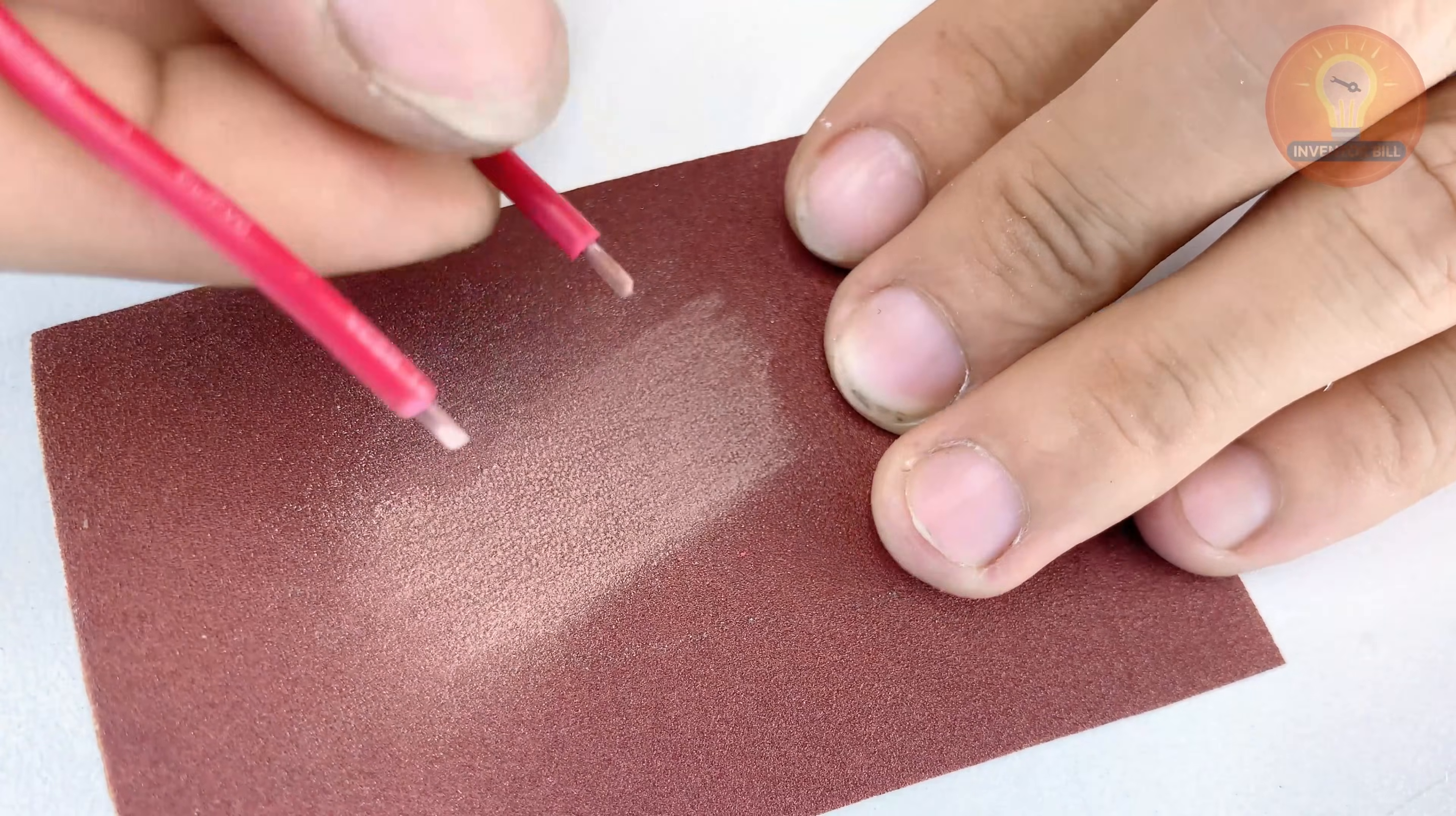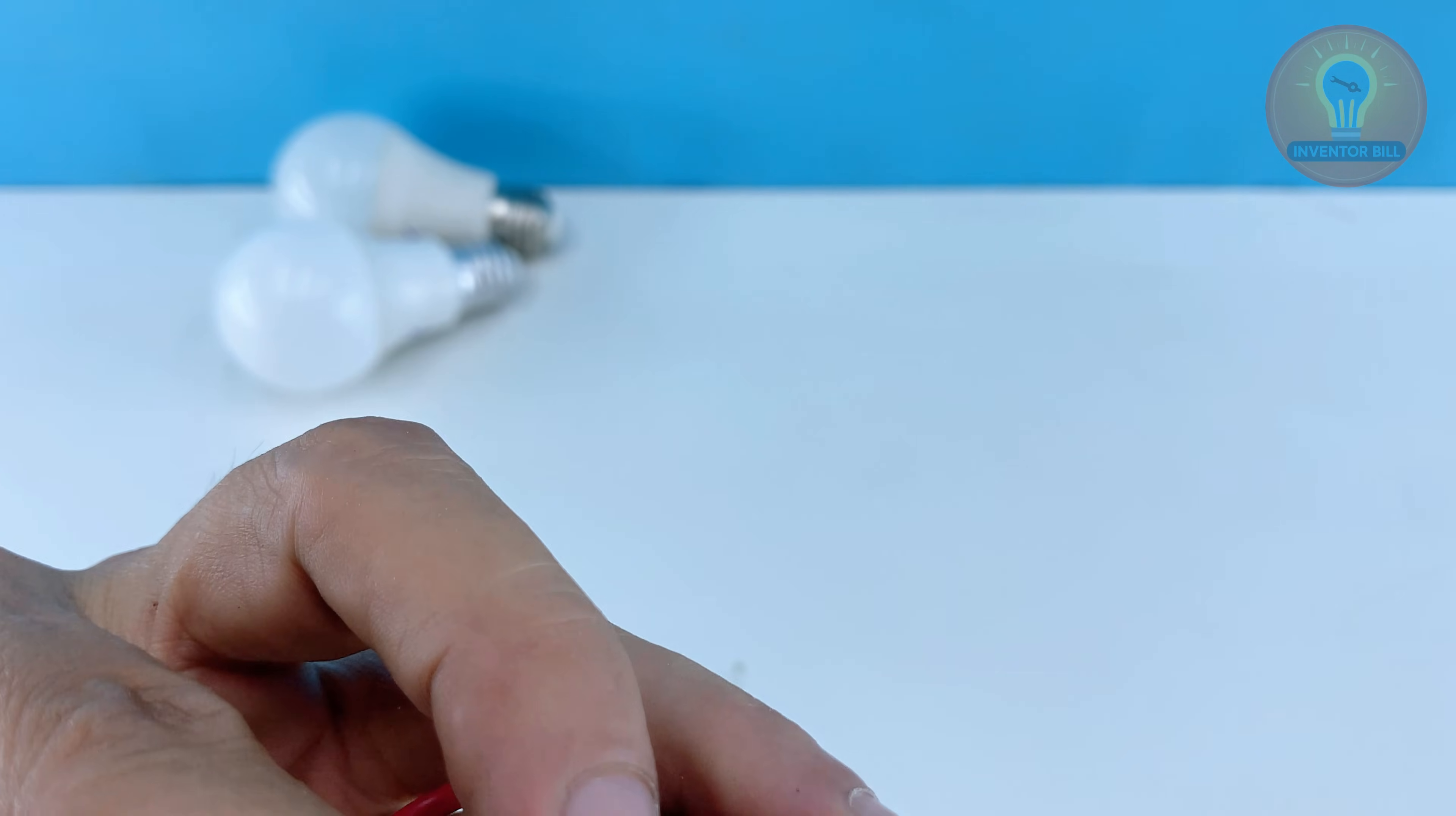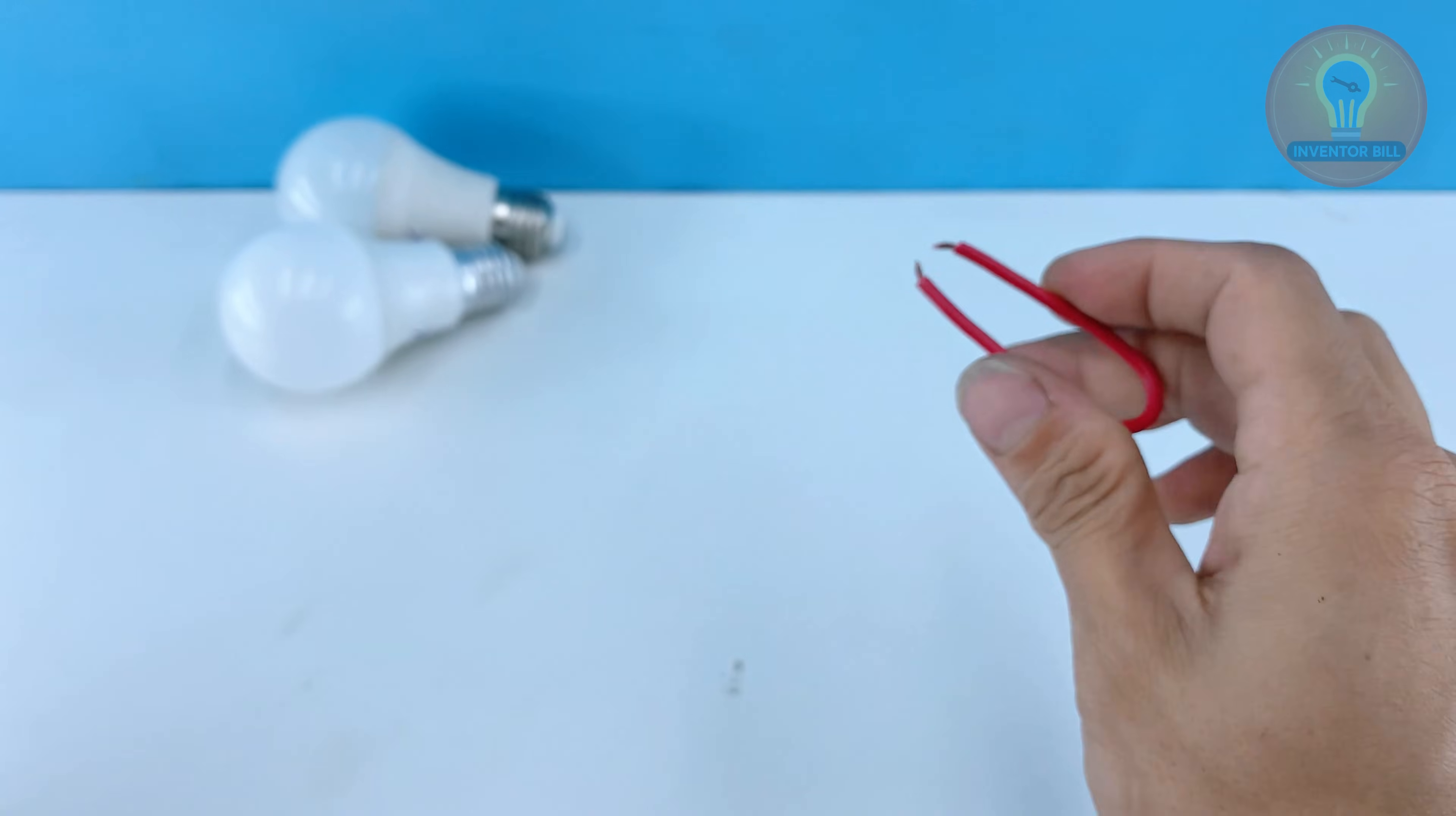Now place each tip on fine sandpaper and sharpen them until both ends come to a neat point. This helps the tips touch each LED chip without slipping. When you're done you'll have a safe and steady tool that gives you good contact with the small pads on the circuit board. This homemade tweezer lets you test every LED one by one.